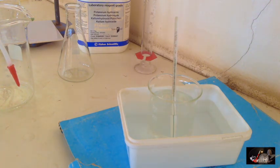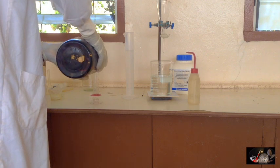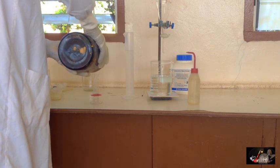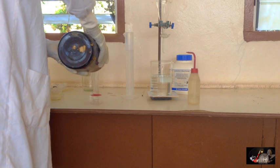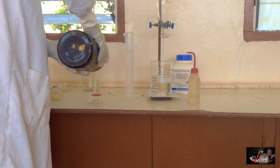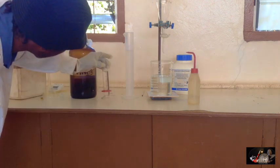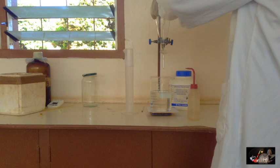After allowing the solution to cool down to room temperature, you then measure 100 milliliters of concentrated nitric acid using a measuring cylinder. This is my setup: a separating funnel on top containing the acid, running directly into the alkaline solution below.